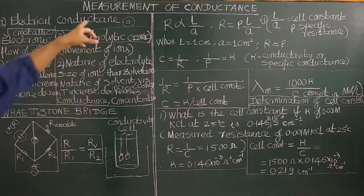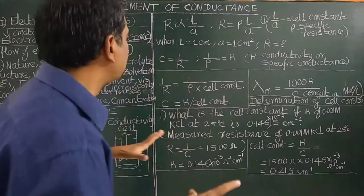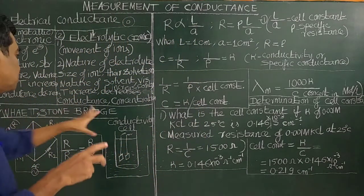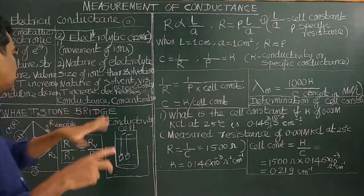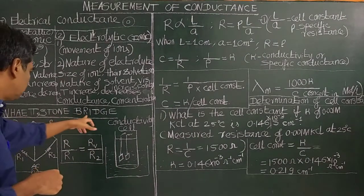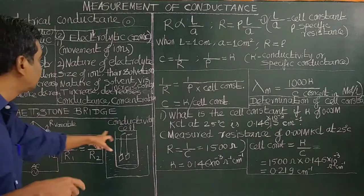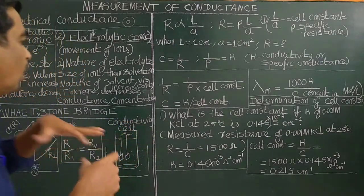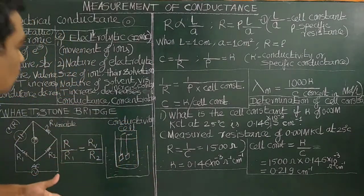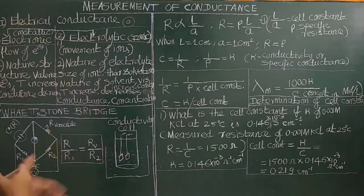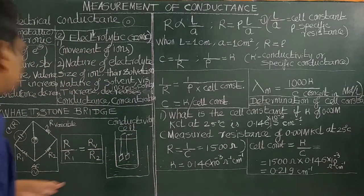How is the conductance measured? Using a Wheatstone bridge — which we have studied in the electricity chapter in physics. Using the Wheatstone bridge, the conductance or conductivity of the electrolytic solution, or the resistance of the electrolytic solution, can be measured.